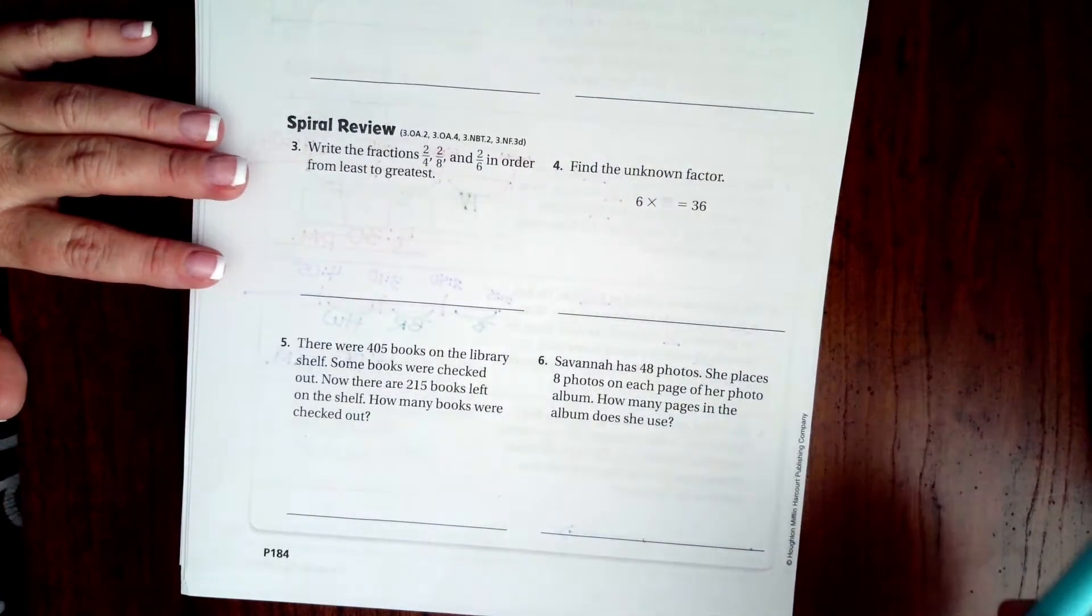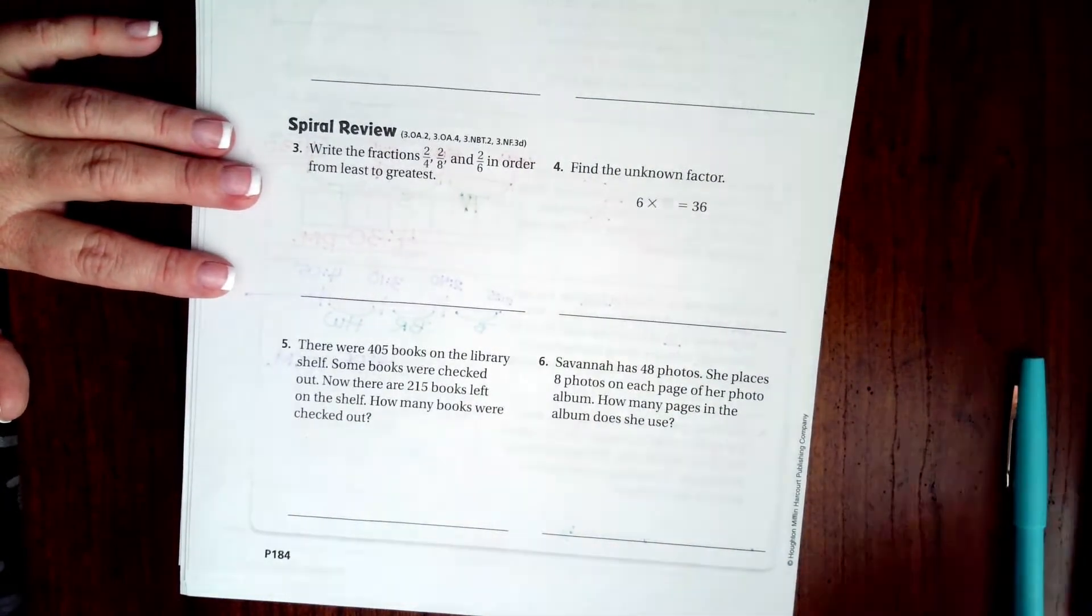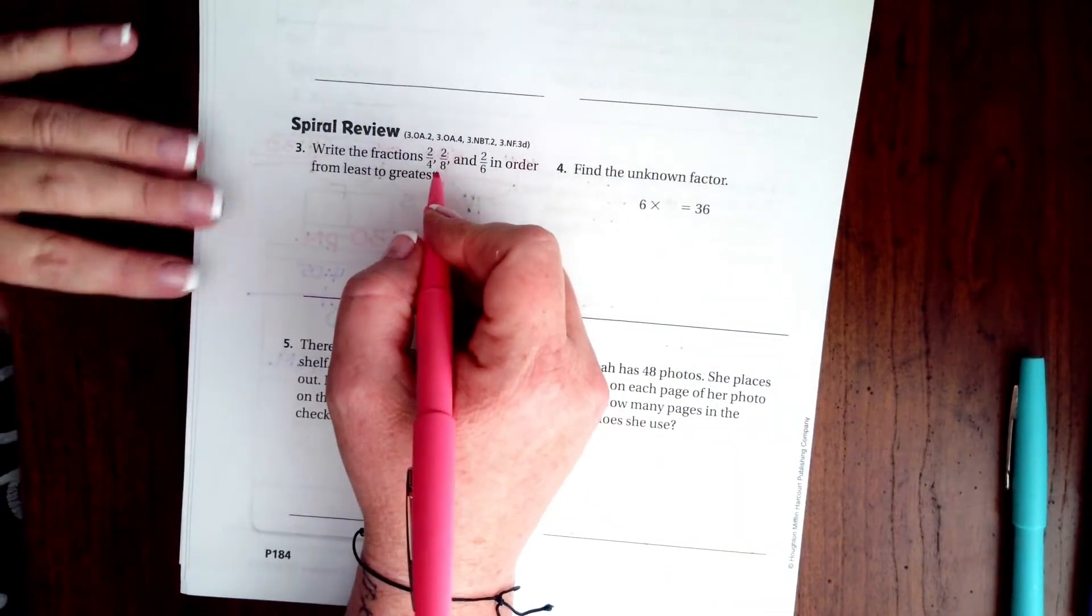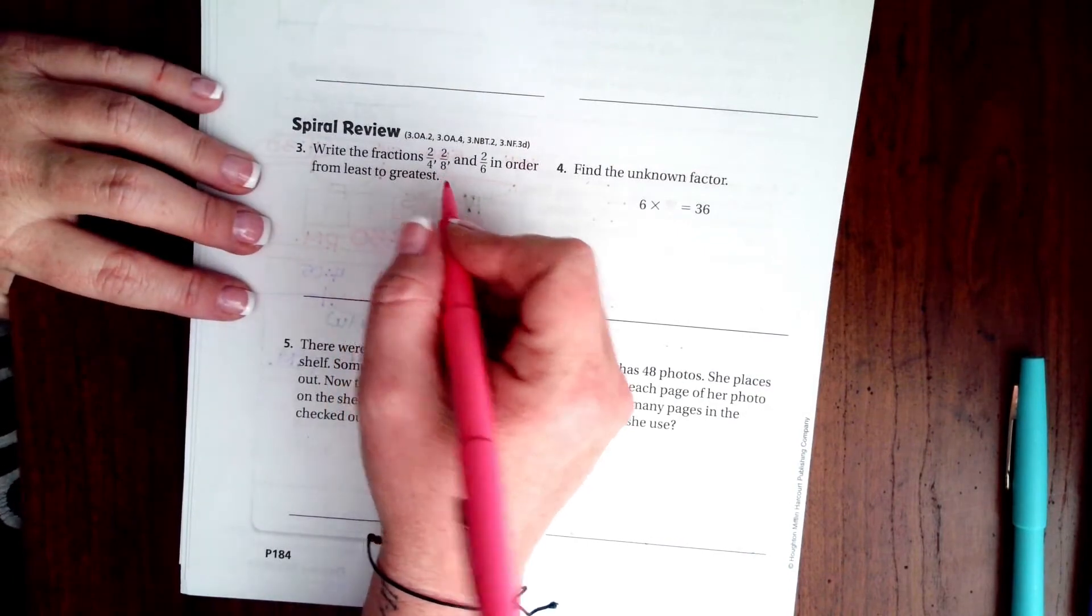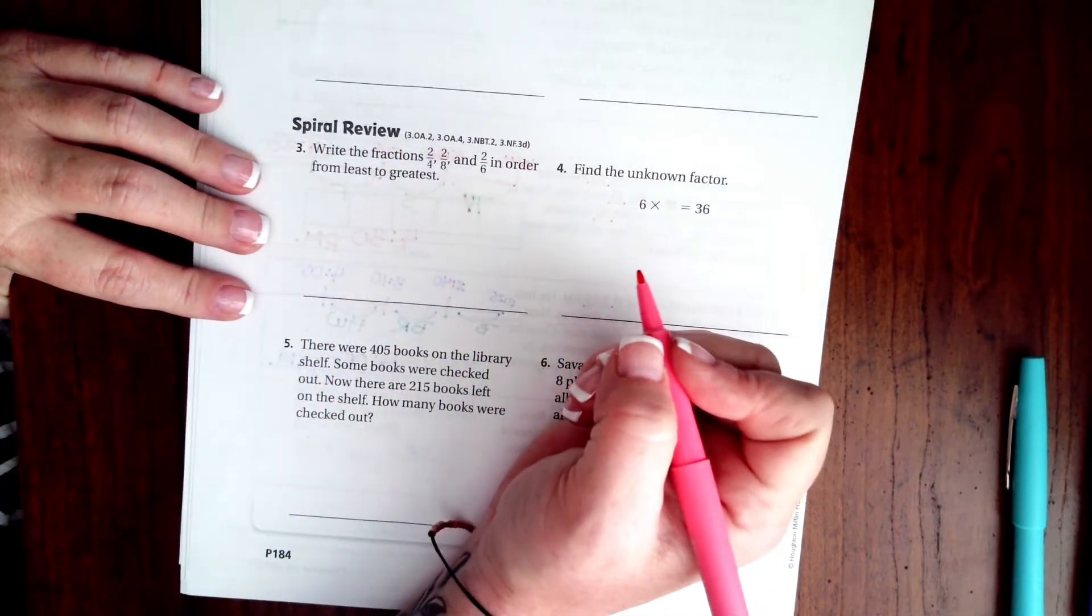We're going to go ahead and go over to the back side where you guys are going to do the lesson check just like always. We are going to go down and do the spiral review. It says write fractions 2/4, 2/8, and 2/6 in order from least to greatest.